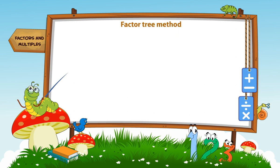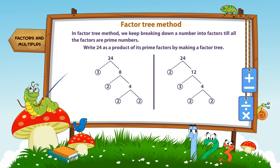Factor Tree Method. In Factor Tree Method, we keep breaking down a number into factors till all the factors are prime numbers. The shape of a factor tree depends upon how you factorize a number. Write 24 as a product of its prime factors by making a factor tree.